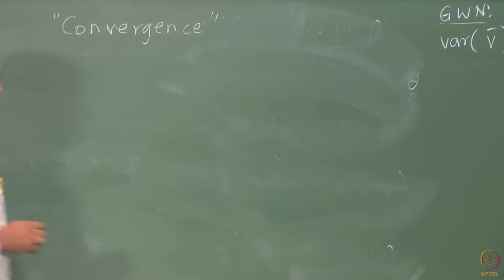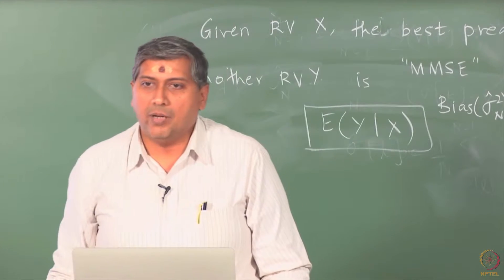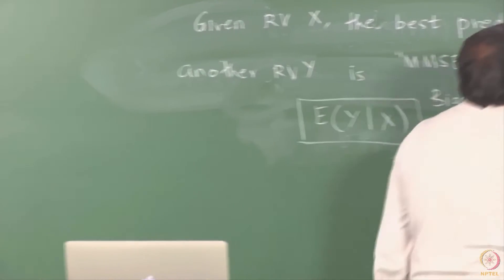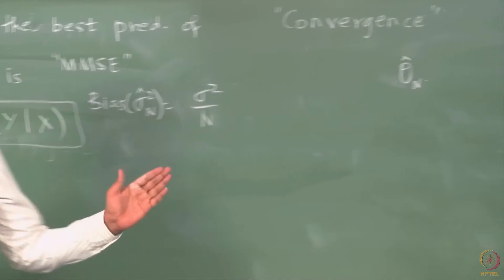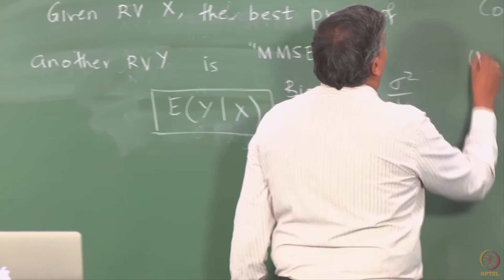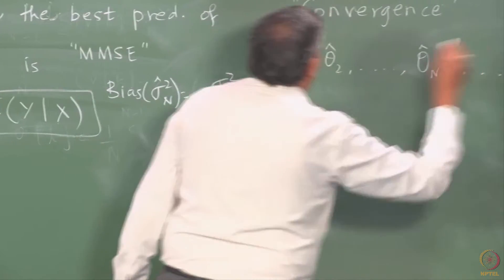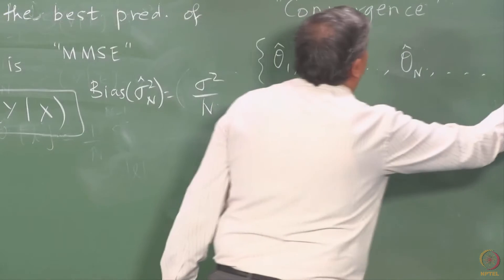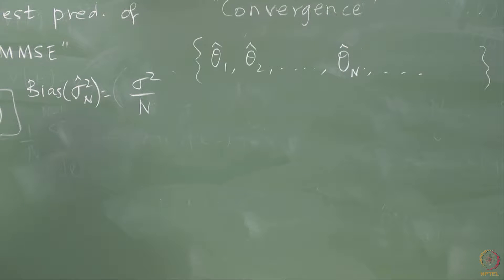The basic idea is as follows. Suppose I have n observations and I have estimated a parameter theta. We denote that as θ̂_n, with subscript n, and the sample size can go from 1 to infinity. So my sequence begins from θ̂_1, θ̂_2, and so on. Each estimate I am constructing is a random variable — remember, θ̂ is a random variable.